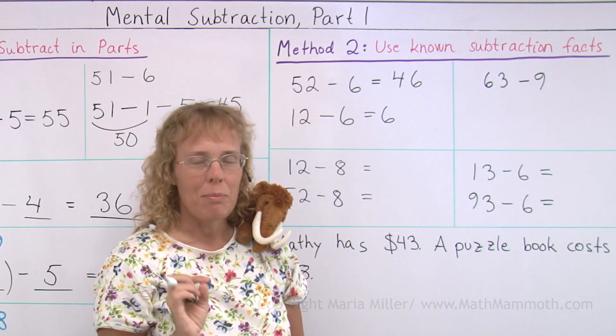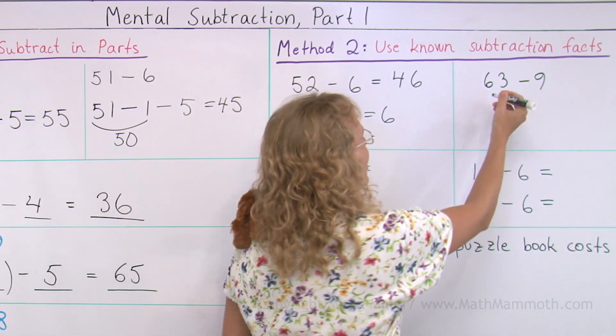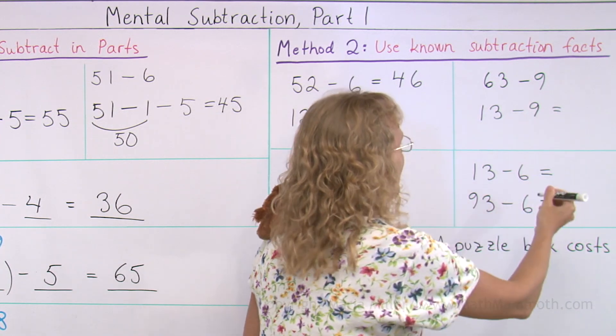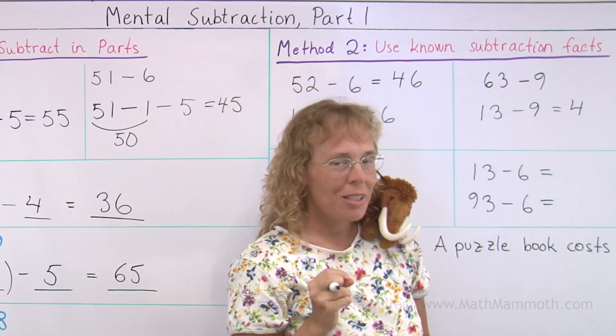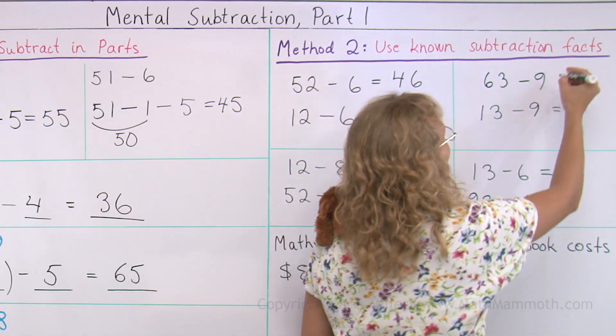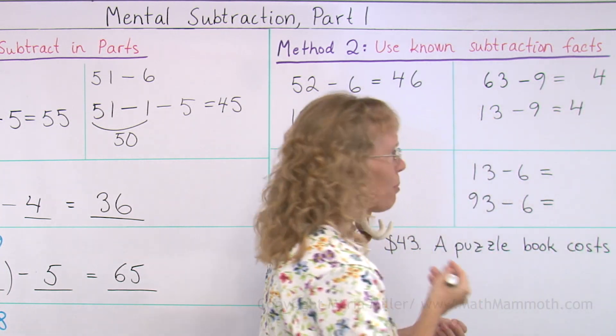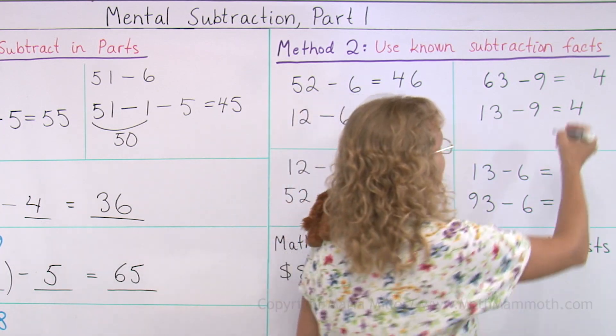Now this one. The helping problem is, again, you take one of your teen numbers. 13 minus 9. And that equals 4, right? You should know that by memory by now. And now this one here will end in 4. But it will be in the previous 10, in the 50s. 54.